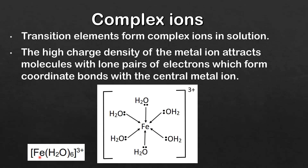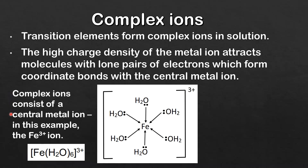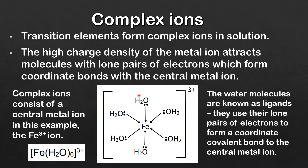Complex ions consist of a central metal ion — in this example the Fe3+ ion, which you can see in the middle. The water molecules around the central metal ion are known as ligands. They use their lone pairs of electrons to form a coordinate covalent bond to the central metal ion. The arrows represent the coordinate covalent bond between the ligand and the central metal ion. The square brackets show that this is a complex ion, and the charge on the complex ion is written outside the square brackets — in this case it's 3+.